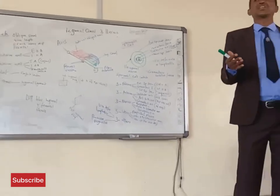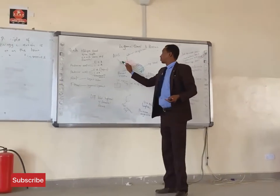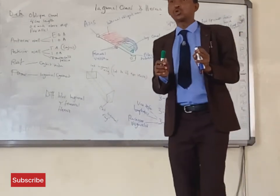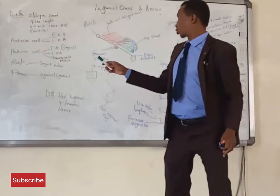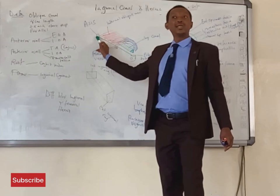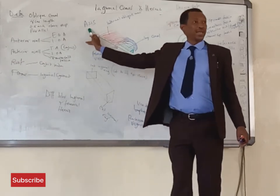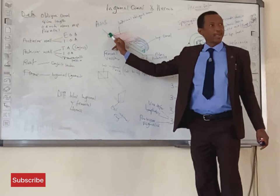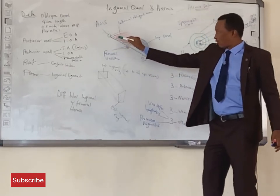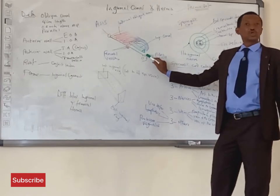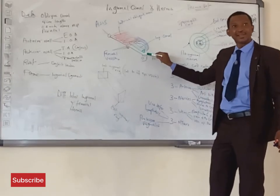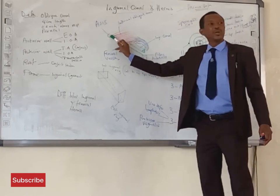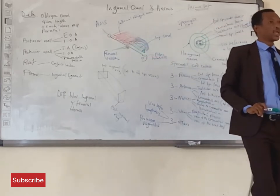This so-called ligament begins from the anterior superior iliac spine, known as the ASIS. The rolled-in fibers of the external oblique muscle of the abdomen begin from the ASIS and then pass obliquely downward and toward the medial side — that is, inferior-medially in anatomical terms. So the inguinal ligament passes inferior-medially from the anterior superior iliac spine down to the pubic tubercle.